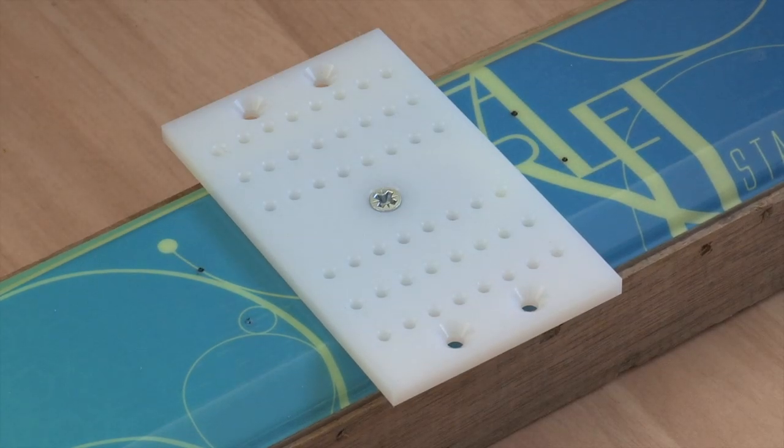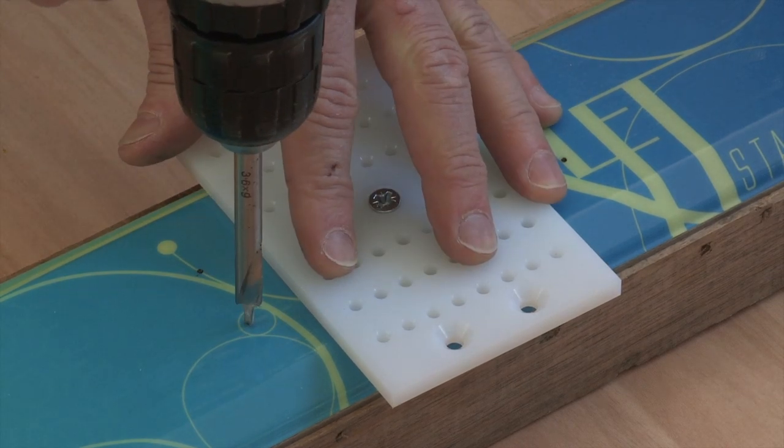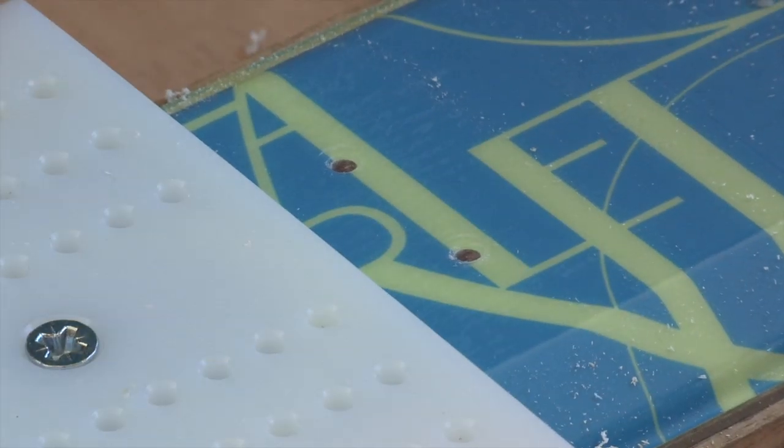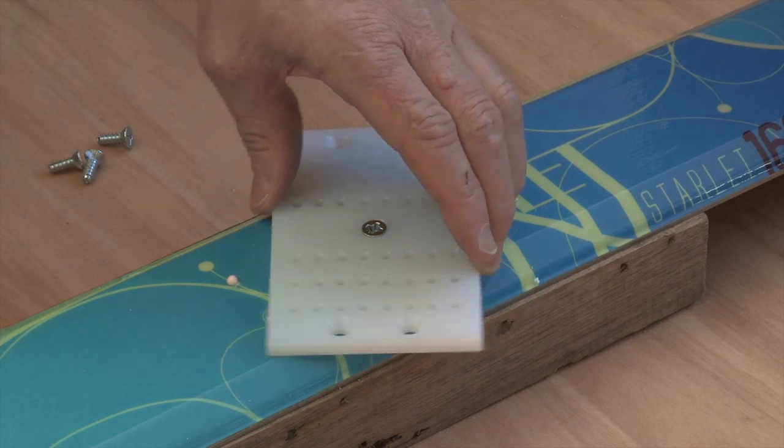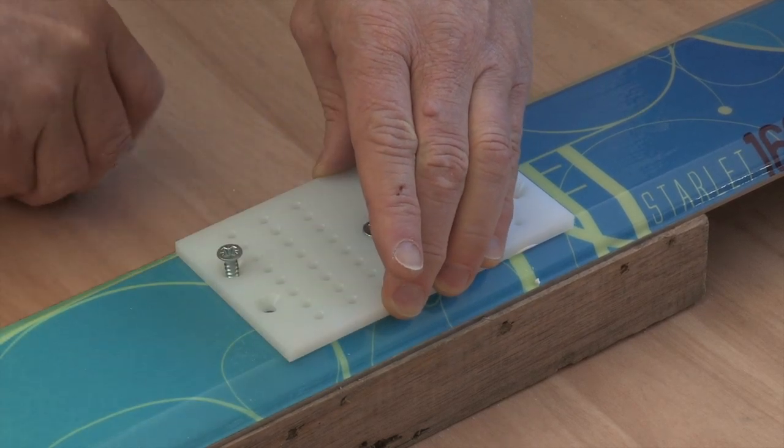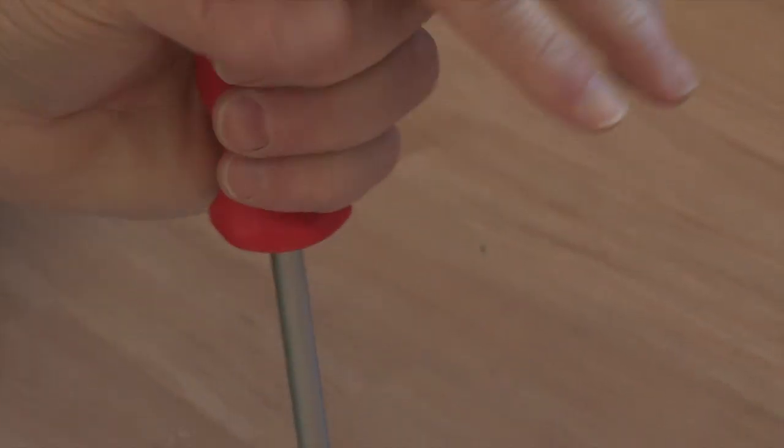Rotate the multi-shim to expose the four indents. Drill the holes, clean the surface, fill with glue and now bed down all five screws in the multi-shim. Don't over-tighten the screws.